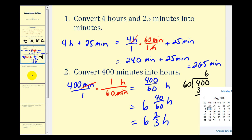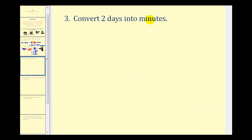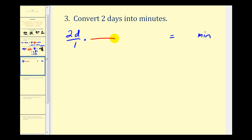Let's take a look at one more example. We want to convert two days into minutes. Sometimes we have to use more than one unit fraction. We'll start by putting two days over one. The most obvious first conversion is days into hours, so we put days in the denominator and hours in the numerator. Notice how we're not converting straight into minutes — we use one day to twenty-four hours.